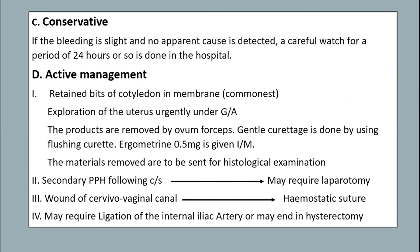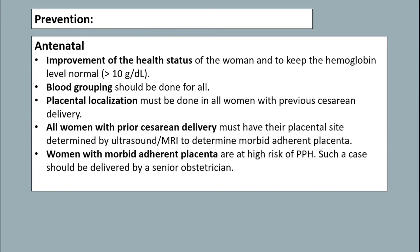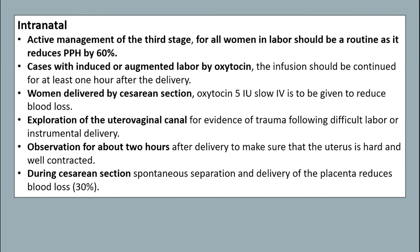Prevention includes antenatal care such as improvement of health status of the woman, blood grouping, placenta localization, and all women with prior caesarean delivery must have their placenta site determined by ultrasound or MRI. Women with morbid adherent placenta should be delivered by a senior obstetrician. Intrapartum measures include active management of the third stage, expression of the uterine-vaginal canal, observation for about two hours after delivery, and during caesarean section, separation and delivery of the placenta, and assessment of blood loss.